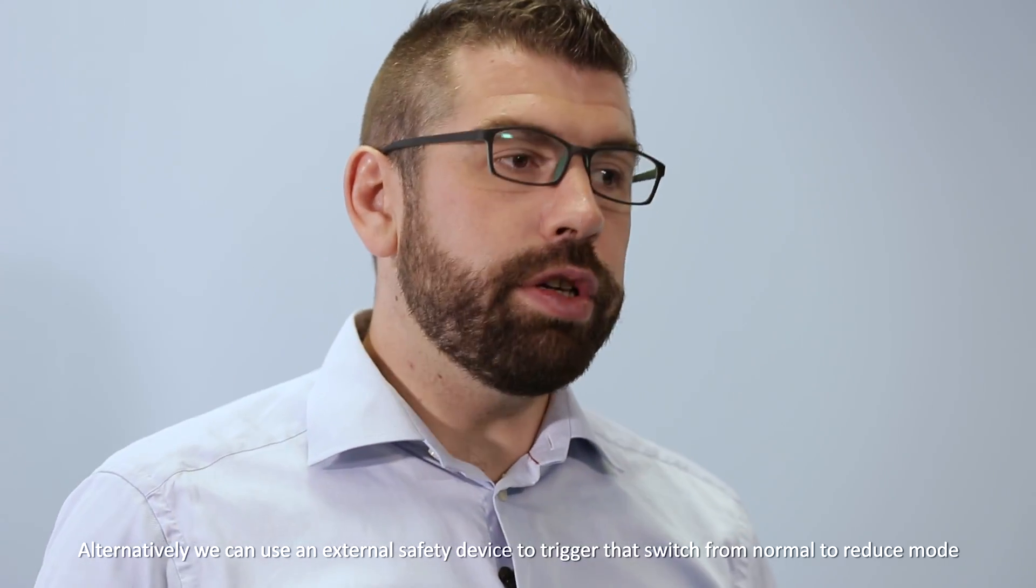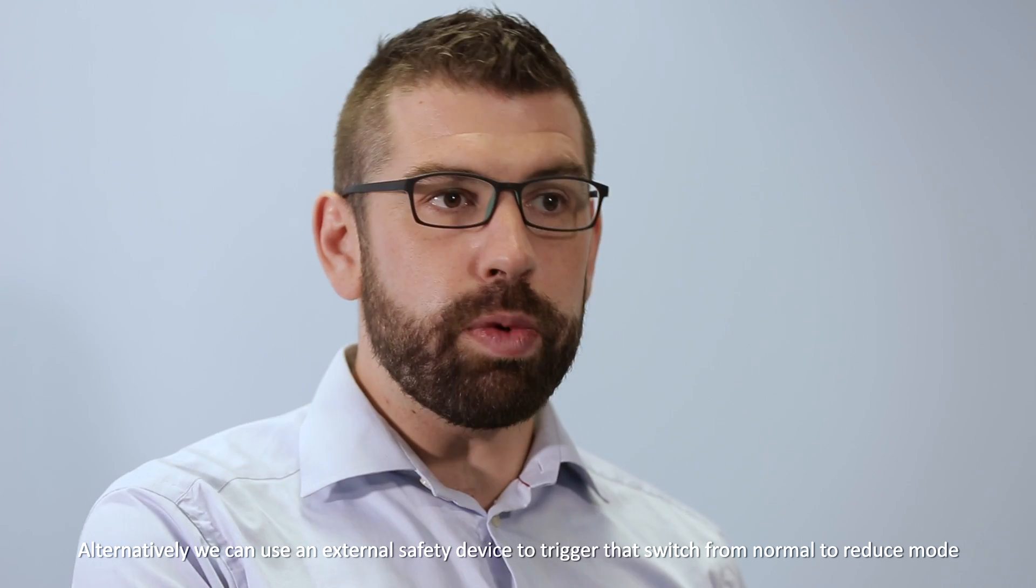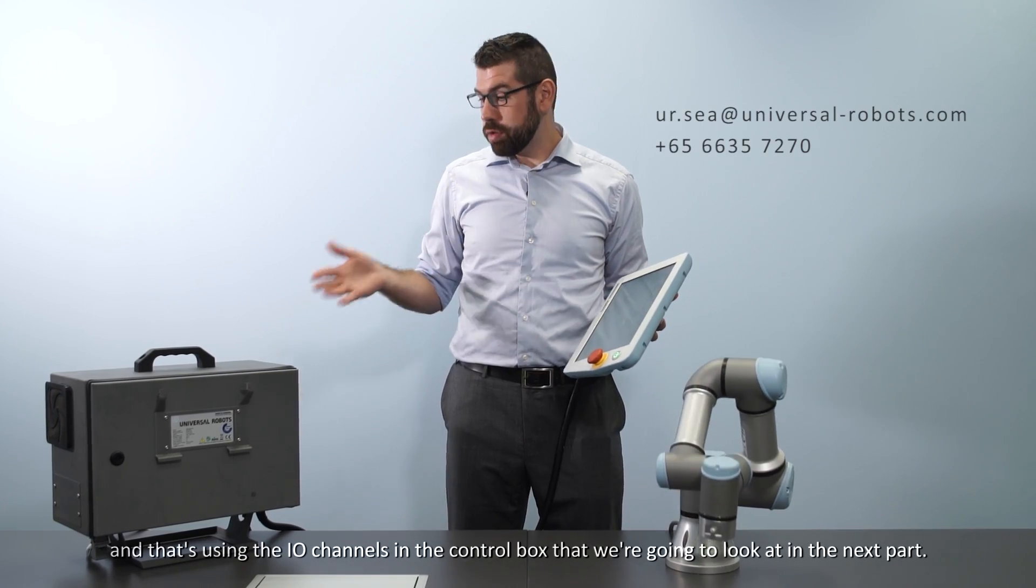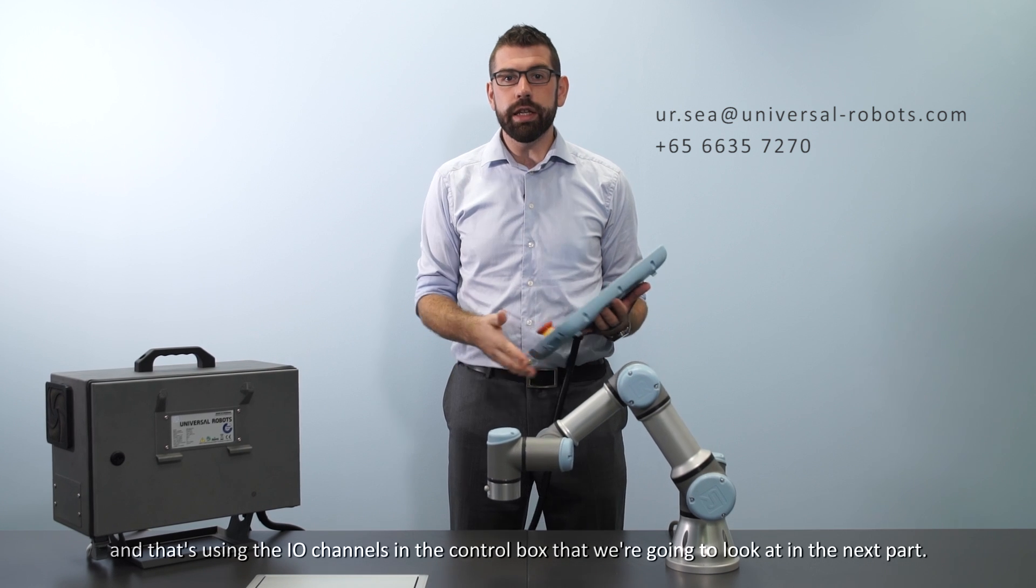Alternatively we can use an external safety device to trigger that switch from normal to reduced mode, and that's using the IO channels in the control box that we're going to look at in the next part.